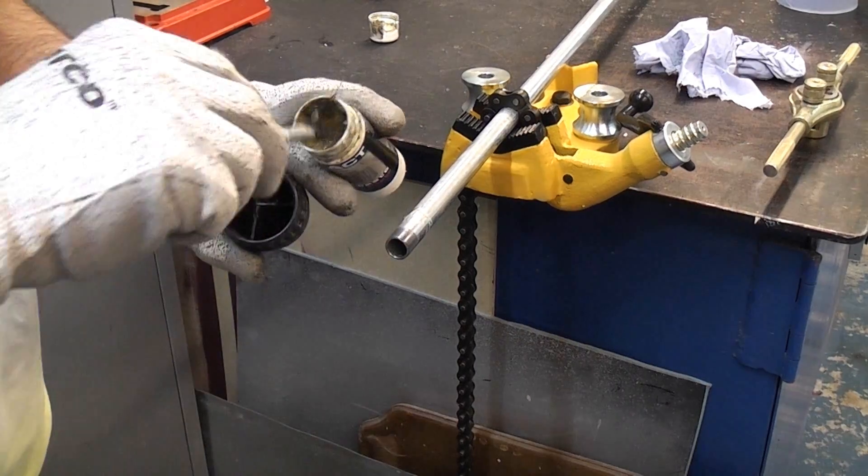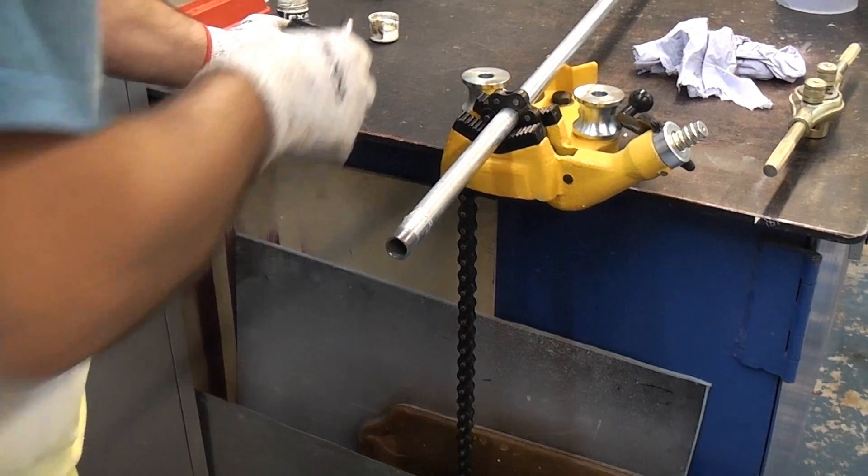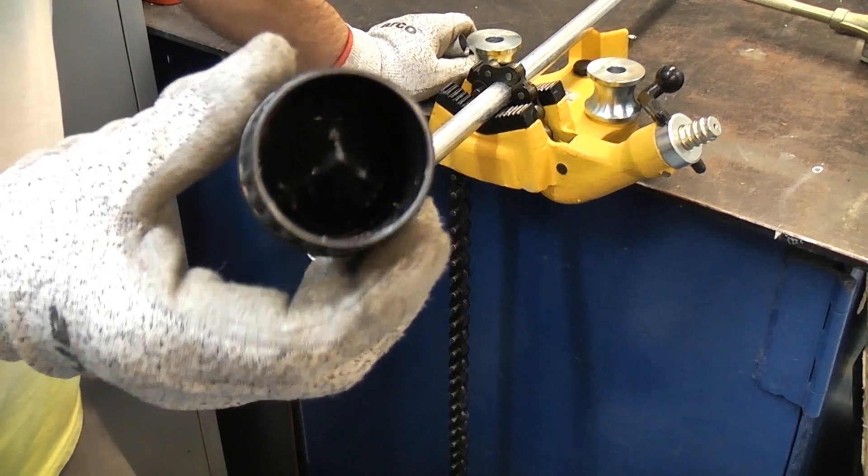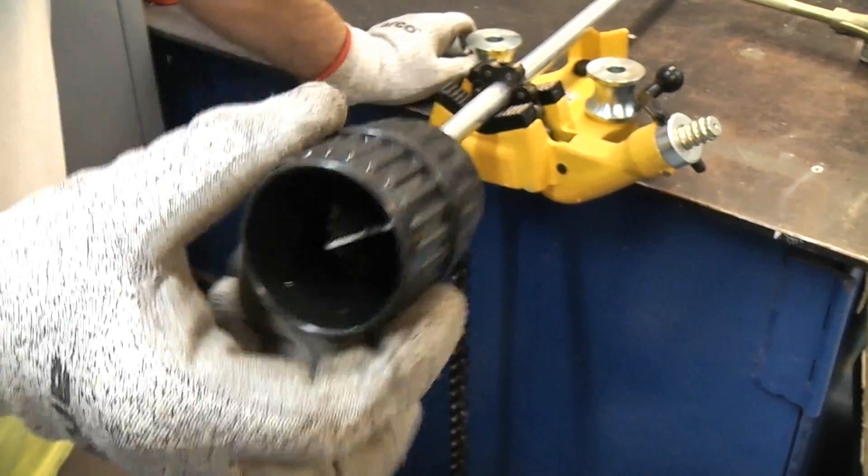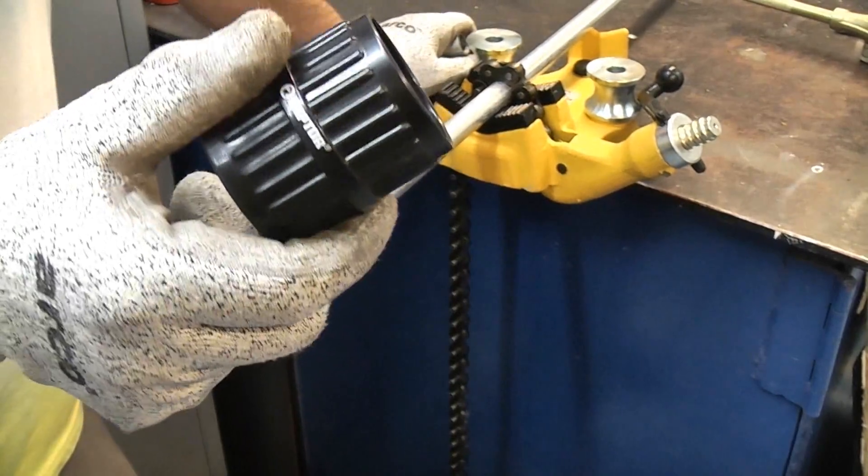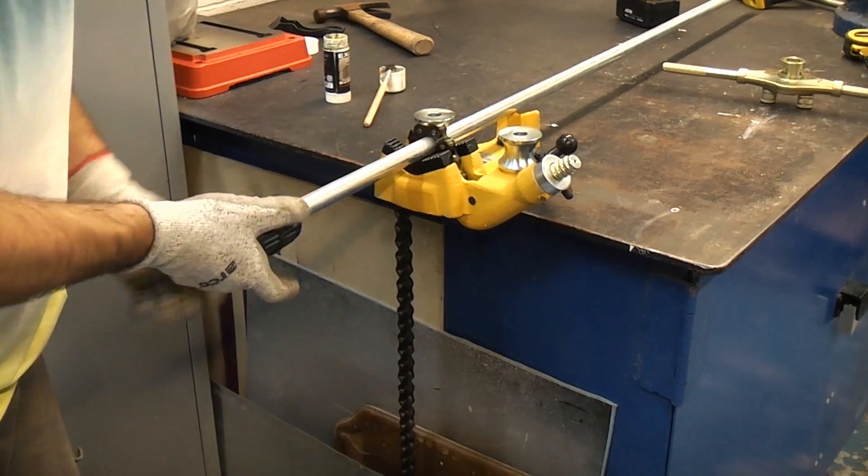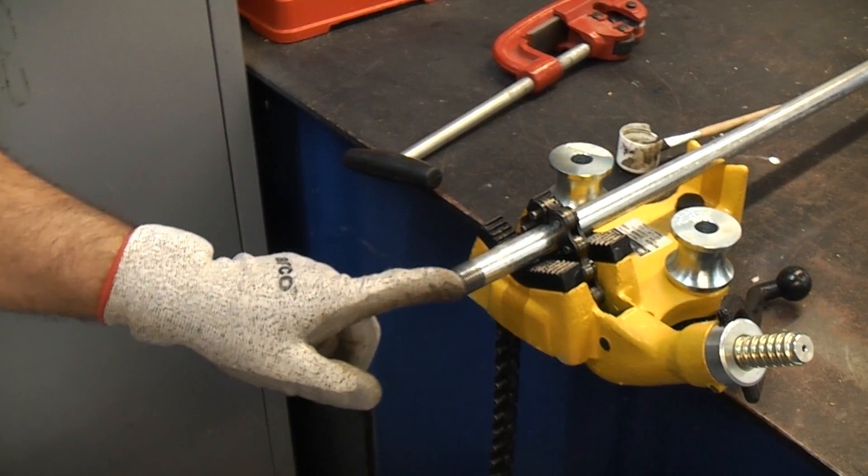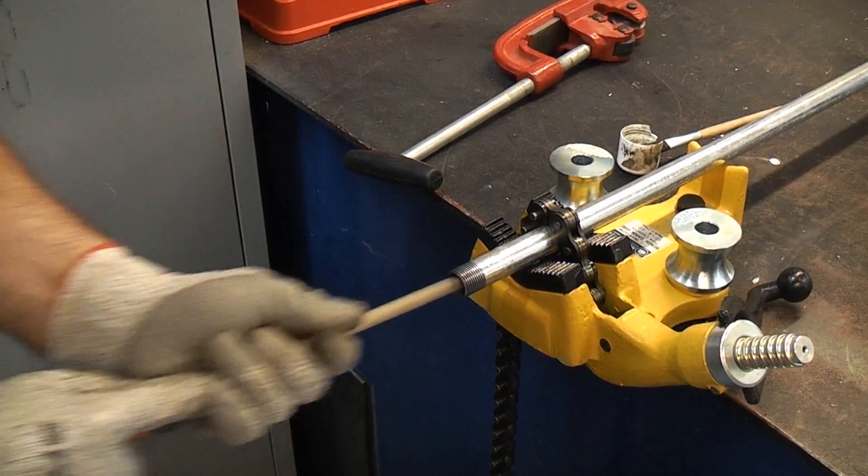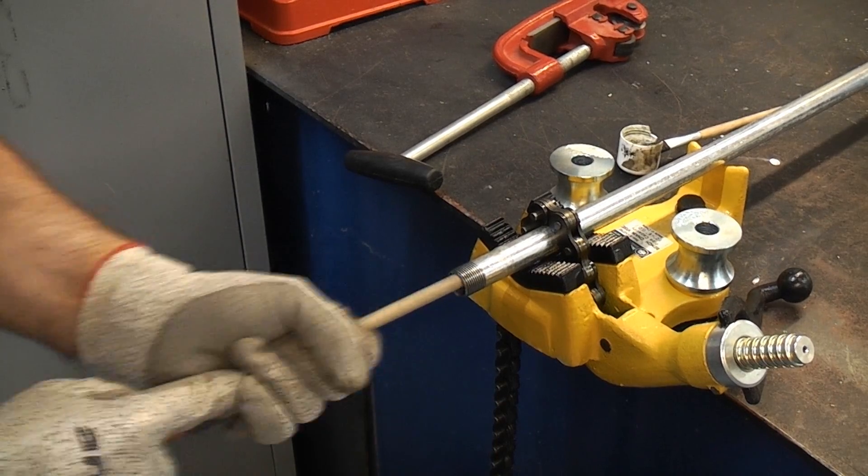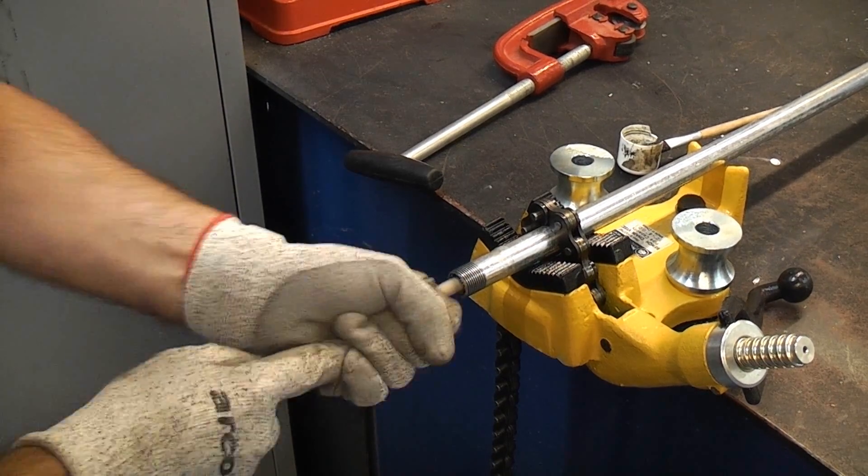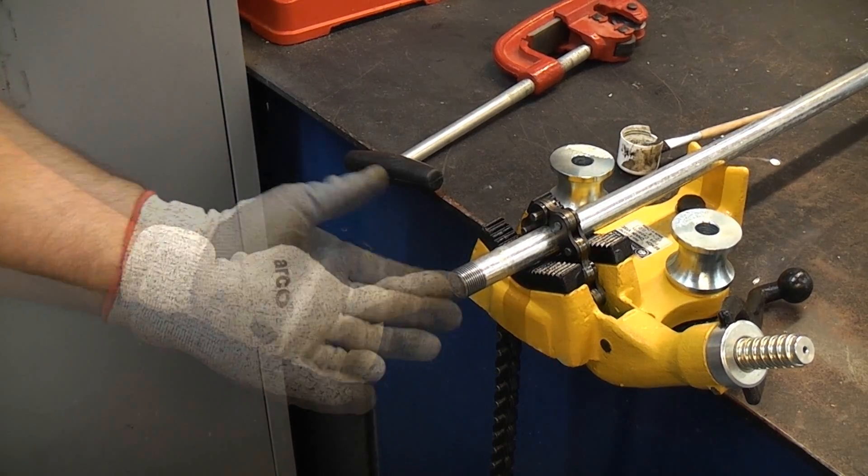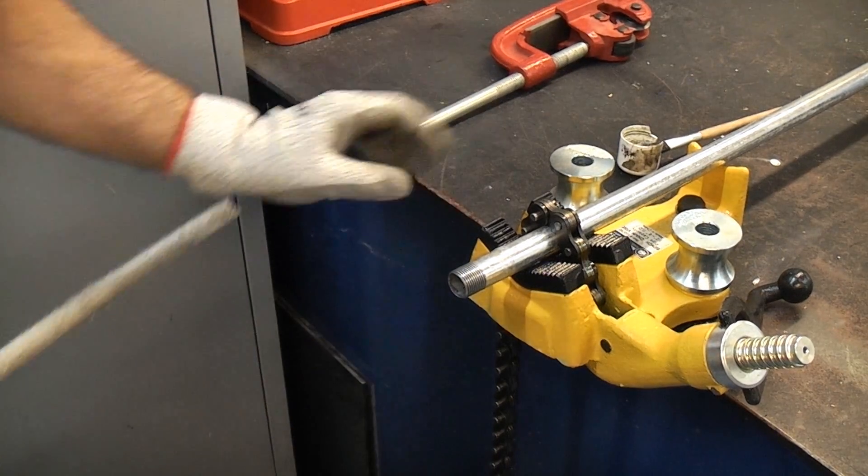We do have a tiny burr on the inside of there. I'm just going to apply some more paste. You can get a special reamer for removing the burr. Unfortunately I'm at home so I'm just going to use this deburring tool which normally will be used on a copper pipe. You can of course remove the internal burr using a round file. It doesn't matter which method you use, it depends what tools you've got available.